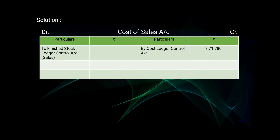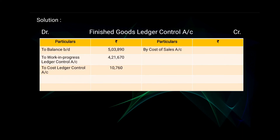The balancing amount of the Cost of Sales Account on the debit side will be transferred to Finished Goods / Finished Stock Ledger Control Account as 'sales' — amount 3,71,780. The total of the Cost of Sales Account is 3,71,780 on both sides. This amount is transferred to Finished Goods Ledger Control Account as 'by Cost of Sales Account — 3,71,780.' The total of Finished Goods Ledger Control Account is 9,36,320 on both sides; the balancing amount (by balance carried down) is 5,64,540.